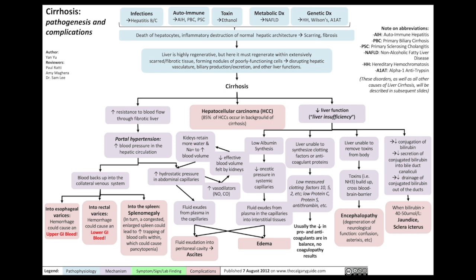Before discussing these two main pathophysiological pathways, let's first address the one thing we shouldn't miss in a patient with cirrhosis: hepatocellular carcinoma, liver cancer that originates within the liver. Note that 85% of hepatocellular carcinomas occur in the background of cirrhosis, which makes sense because chronic inflammation tends to make cells abnormal, especially in their cell division, resulting in cancer.